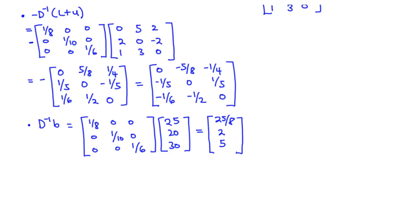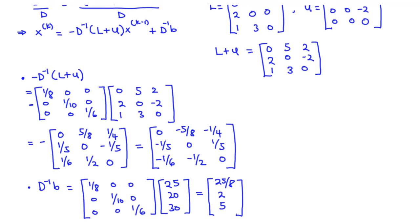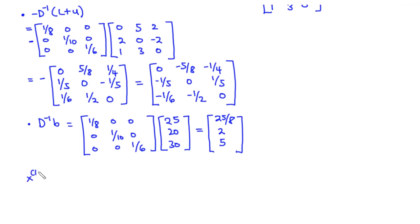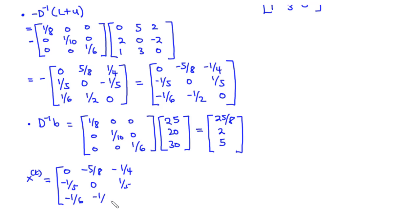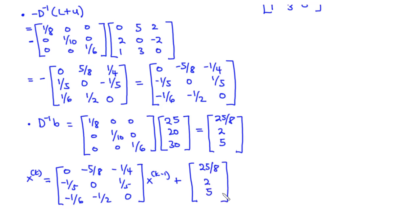So the complete iteration formula is: x(k) = [0, -5/8, -1/4; -1/5, 0, 1/5; -1/6, -1/2, 0] times x(k-1) plus [25/8, 2, 5]. This is the formula we are going to use to find the new set of values at each iteration step.